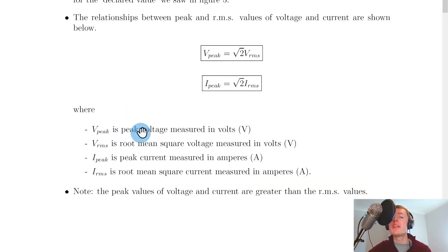So we have that V peak is the peak voltage measured in volts, VRMS is the root mean square voltage measured in volts, I peak is the peak current measured in amperes, and IRMS is the root mean square current also measured in amperes.